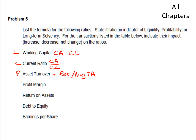Profit margin is also a profitability ratio. It's net income divided by net sales, or net revenue. You compare the bottom line of the income statement with the top line, and you look at how well you're able to convert revenue or sales into profits.